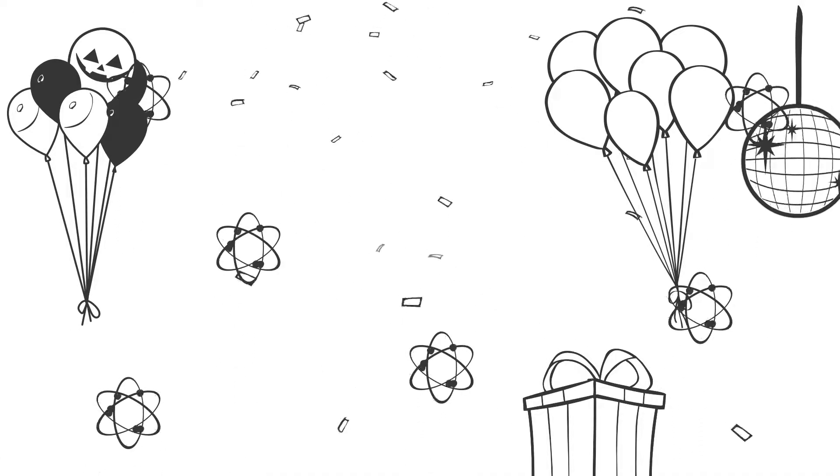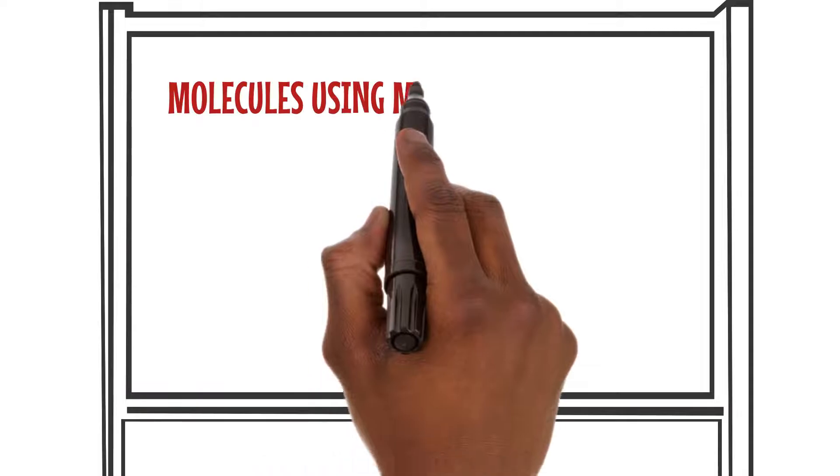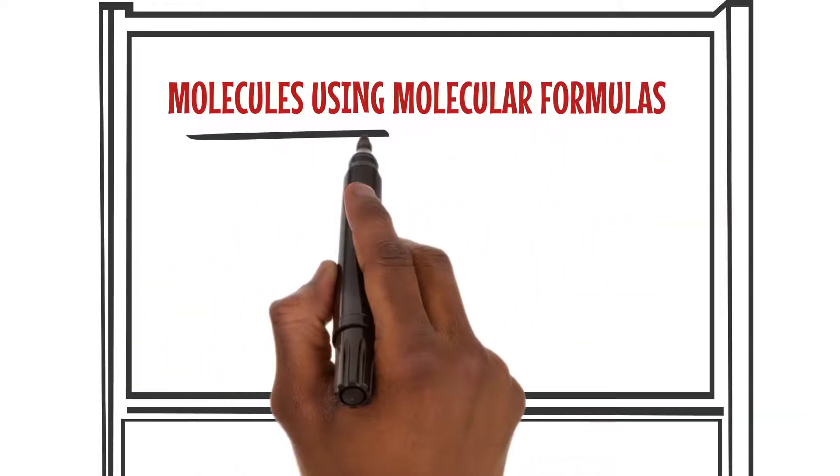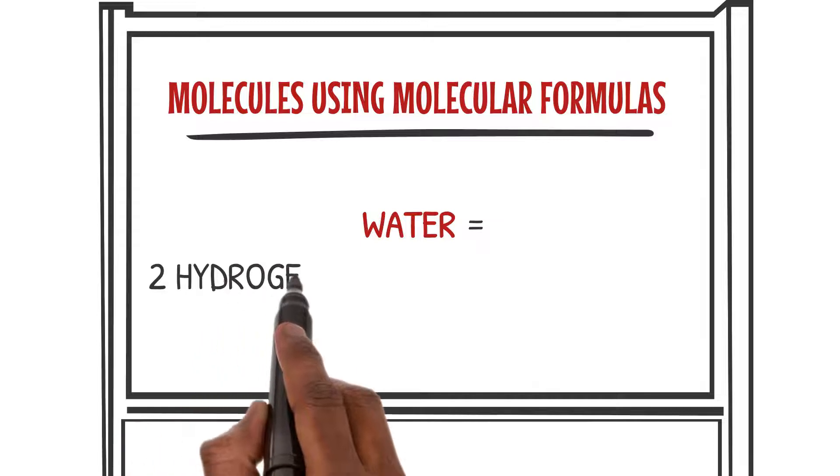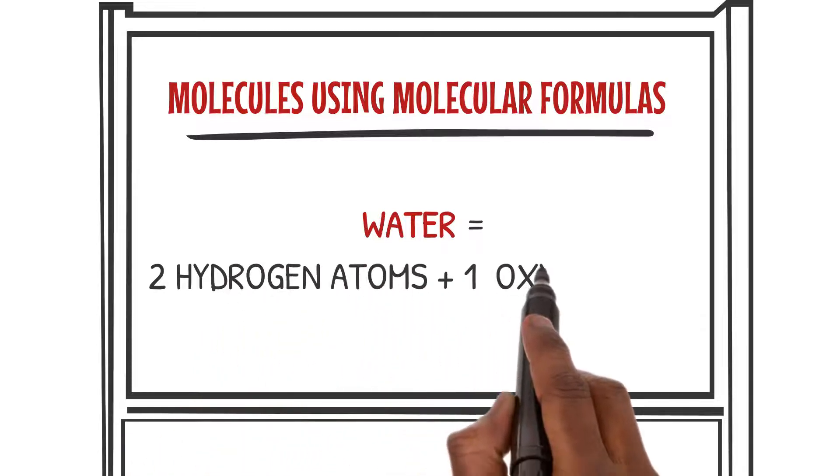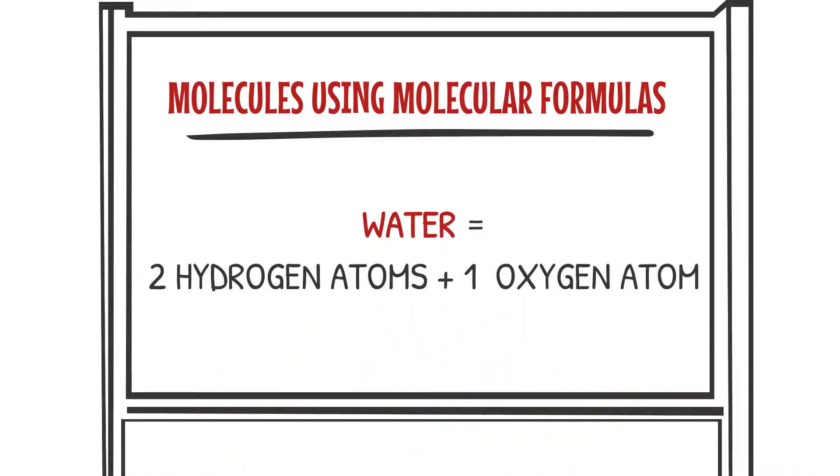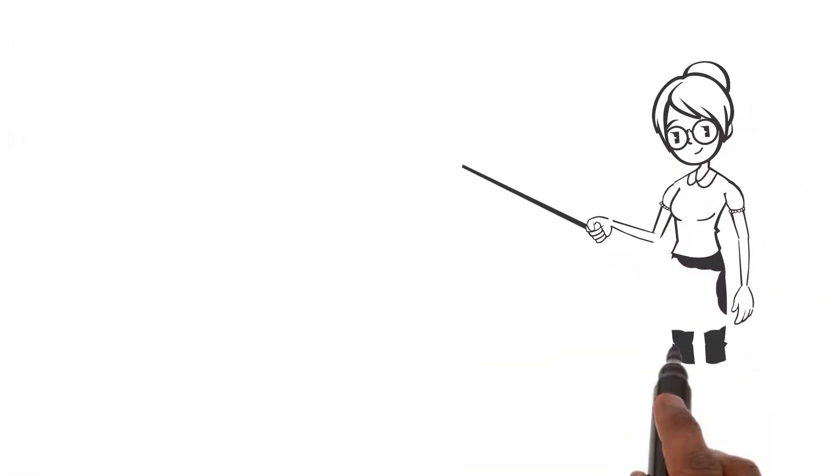Atoms join forces to create molecules—it's like a chemistry party where atoms come together and dance to create amazing compounds. We can represent molecules using molecular formulas. The molecular formula for water is H2O. It tells us that a water molecule consists of two hydrogen atoms and one oxygen atom.